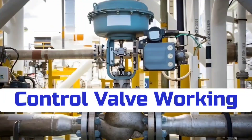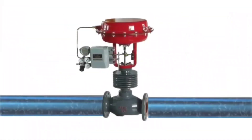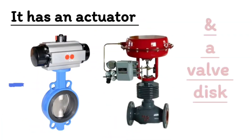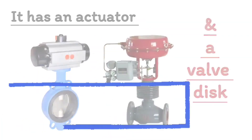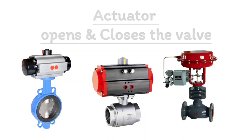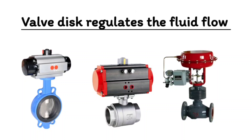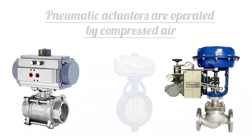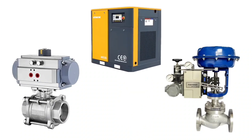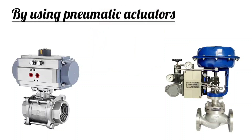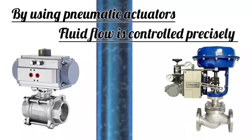Now let's see how a control valve works. The work of a control valve is to adjust fluid flow. It consists of an actuator and valve disc. The actuator is used to open and close the valve. The valve disc controls the fluid flow. Pneumatic actuators are operated with compressed air. The air coming from the air compressor is applied to pneumatic actuators. By using pneumatic actuators, fluid flow can be precisely controlled.